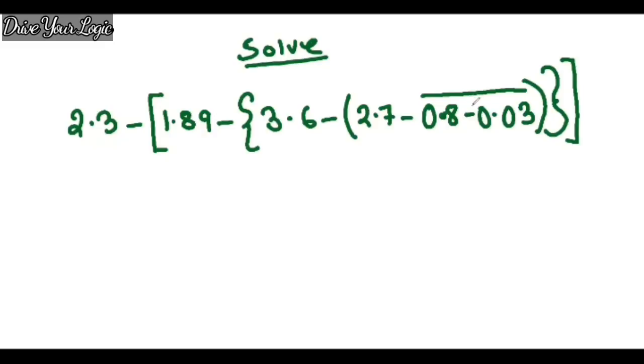After you solve the bar part, then one by one you will just remove the bracket. I hope everybody knows which bracket is called what. First bracket, this one, is called the third bracket.